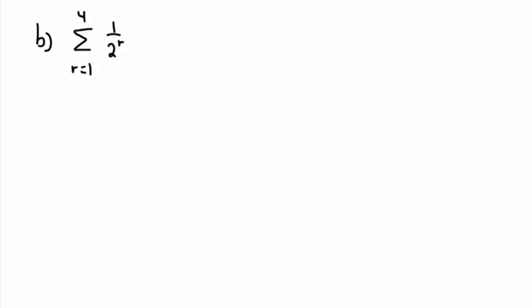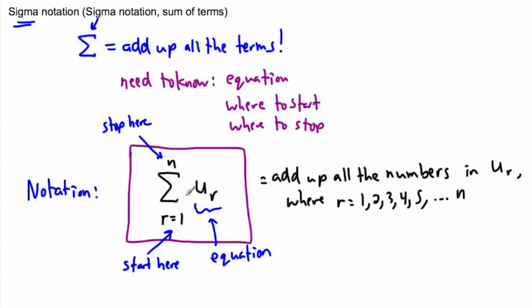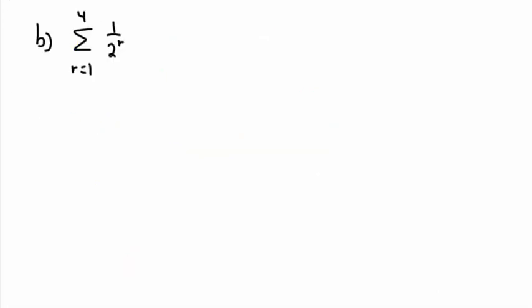We can do another example here. We can do one that has ugly looking exponents. And that's okay, we can still deal with it. So again, this says start at one, finish at four. And use this as your rule. Because remember, this is how it works in general. This just tells you your equation. Start here, finish here. So in this case, then, let's do it.